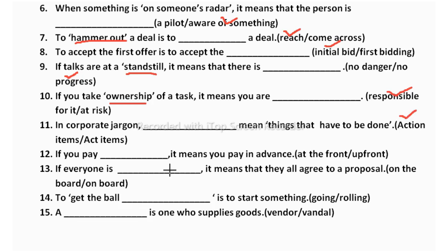If you pay blank it means you pay in advance — at the front or up front? At the front means beforehand, meaning paying in advance. Up front means someone who is frank and honest, so that does not apply here. The correct answer is at the front.